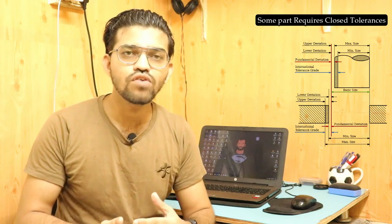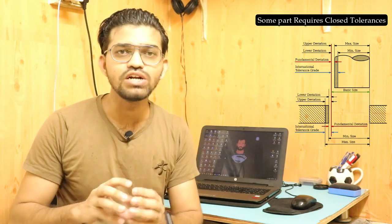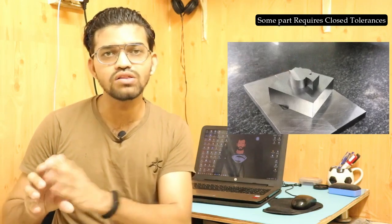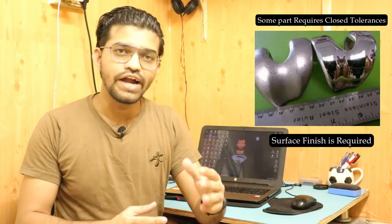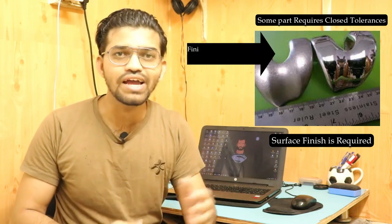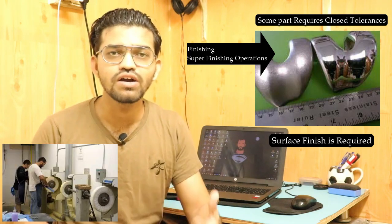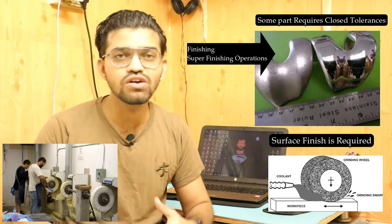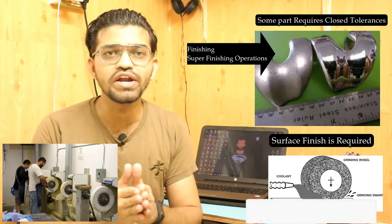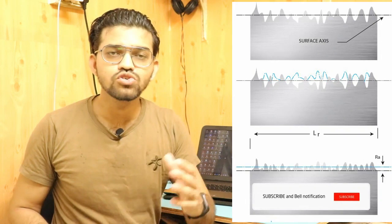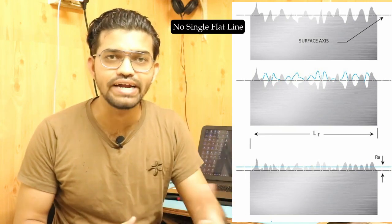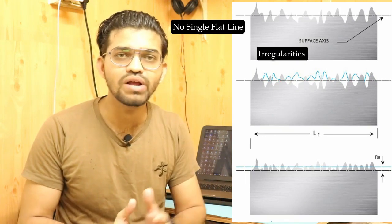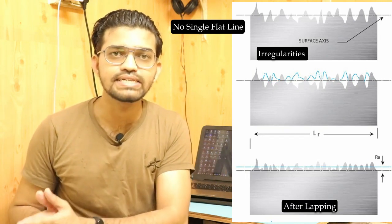In the manufacturing industry, some parts require close tolerances — parts which require snap fits, where one part will assemble with two other different parts. To achieve these close tolerances, a particular surface finish is required. To achieve that surface finish, there are finishing and super finishing operations. Finishing operations include buffing and grinding, but even after finishing operations, there will be some irregularities on the surface of the workpiece. At a microscopic level, the surface won't be a single flat line — the flatness won't be on the higher side. Those irregularities get removed in the super finishing process such as the lapping process.